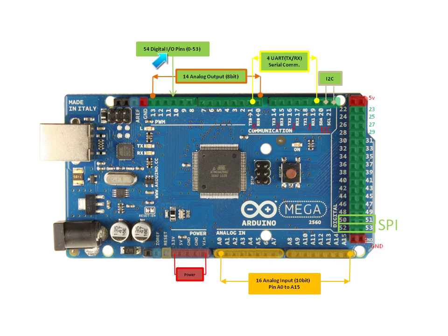There are 54 digital input and output pins. They are labeled from pin 0 to pin 13, from pin 14 to pin 21, and from pin 22 all the way down to pin 53. All shaded in green are digital input and output pins.